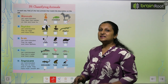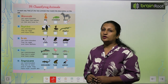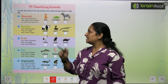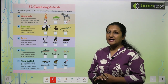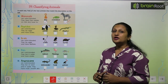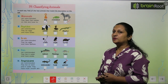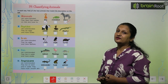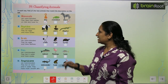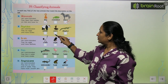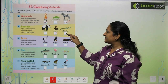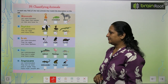Reptiles. Reptiles are cold blooded. They lay eggs and have scales. So aise organisms jinki body per scales hote hai, aur jo eggs lay karte hai, unhe hum bolte hain reptiles. So panda is not a reptile. But cobra is a reptile, aur aise hi alligator bhi a reptile hai.